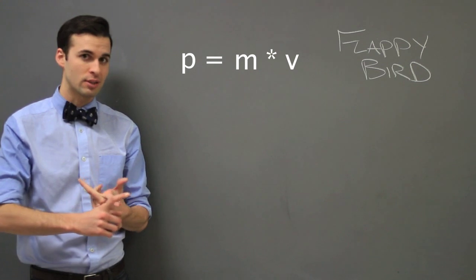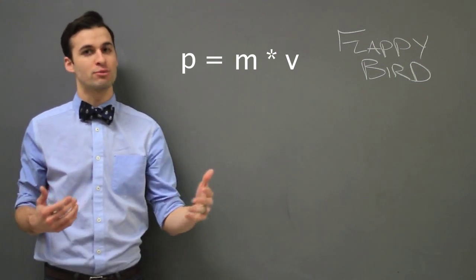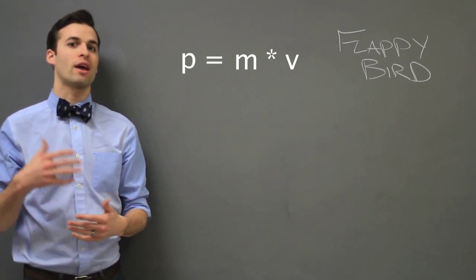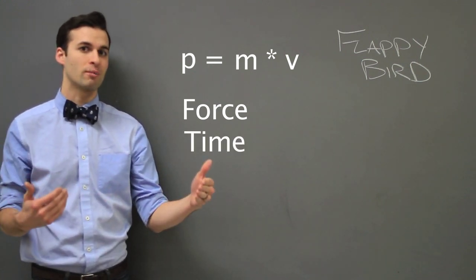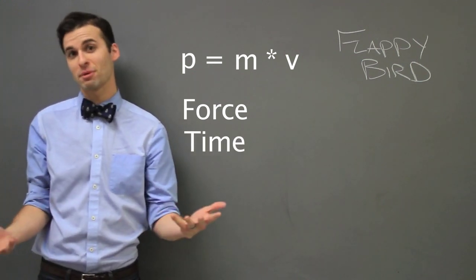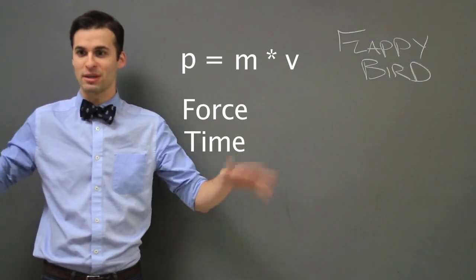Momentum is mass times velocity. And in order to change an object's momentum, we must apply a force. That force is applied over a given time. What's applying the force for the Flappy Bird? Well, his Flappy wings.